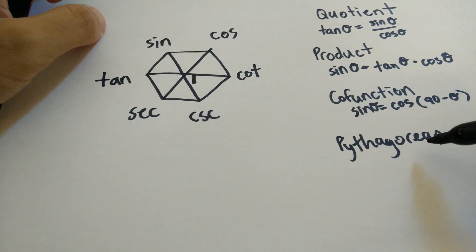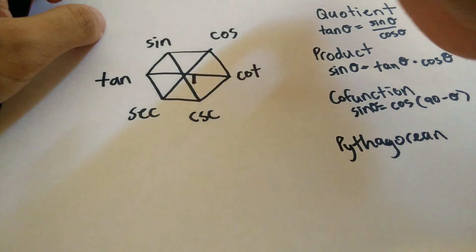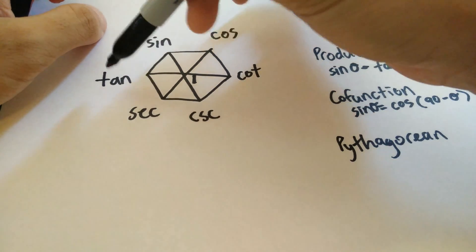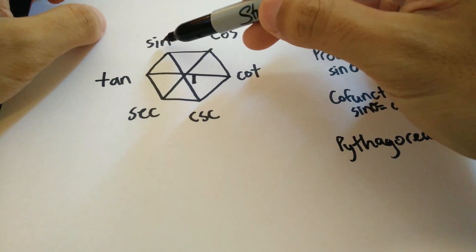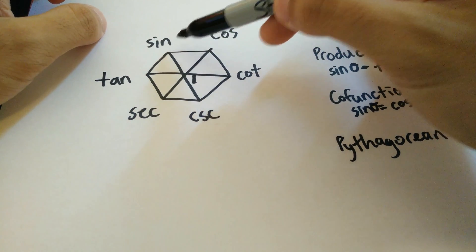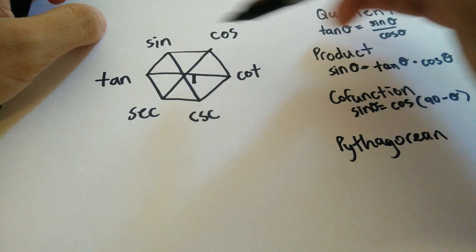So when you use the Pythagorean identities, you have to kind of imagine that each one of these are squared. So imagine that this actually is sine squared theta. This is cosine squared theta, et cetera, et cetera, et cetera.